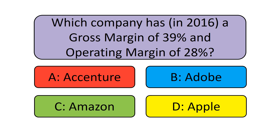So which one of these four companies has the second highest Gross Margin at 39% of revenue and the highest Operating Margin at 28% of revenue? Please vote now, and let's find out in the rest of this video how good your financial intuition is! To practice calculating Gross Margin and Operating Margin, we will go through the results of each of these four companies in alphabetical order.